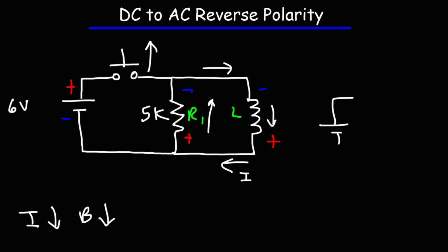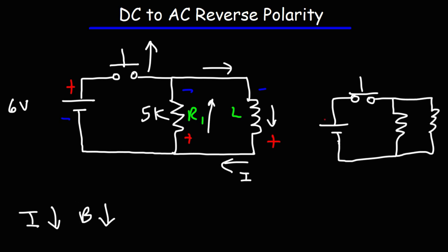When the switch was closed, current was flowing from the positive terminal of the battery through R1, so the polarity across R1 was positive at the top, negative at the bottom. But now when the inductor is releasing its stored energy, the polarity reverses. Thus, the capacitor and the inductor can both be used to change the direction of the current. When these two elements are absorbing energy from the circuit, the current is flowing in one direction. And when they release energy back into the circuit, the current can reverse and flow in the other direction.